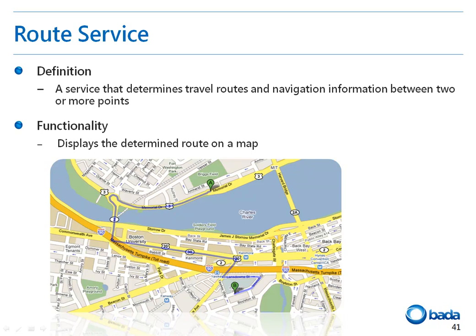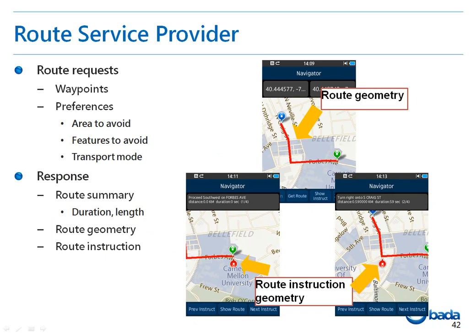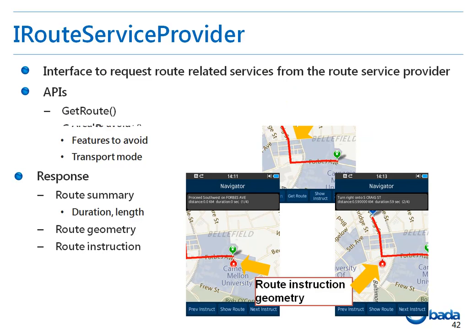Next, we will look at the RouteService. The RouteService allows your application to determine the route between two locations, determine the route through multiple waypoints, and implement navigation features. You can use this service to display a route on a map. The RouteService is available with the support of the RouteServiceProvider. RouteRequest consists of waypoints for the route and preferences such as areas to be avoided, features to be avoided, and the mode of transport. The result from the RouteServiceProvider will include the route summary containing the duration, length, and route geometry — the set of coordinates that graphically represent the determined route — and the turn-by-turn route instructions.